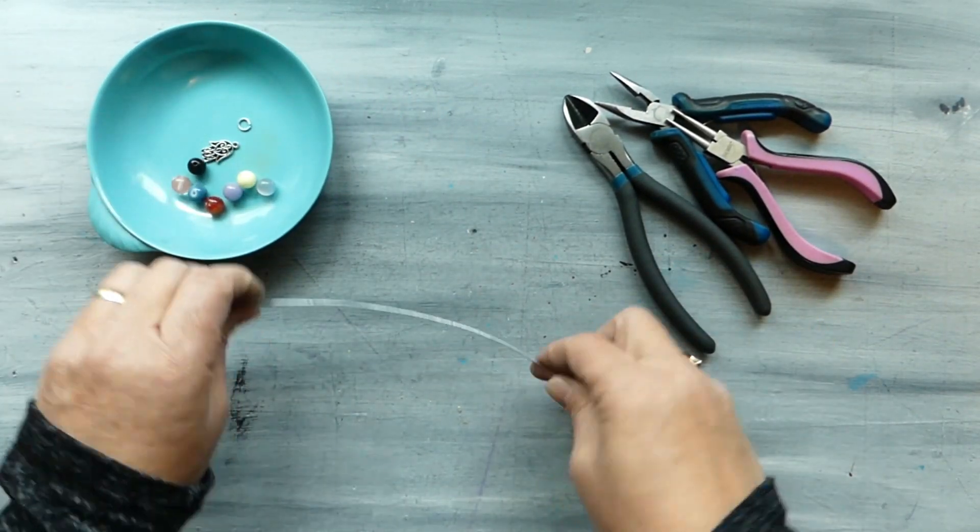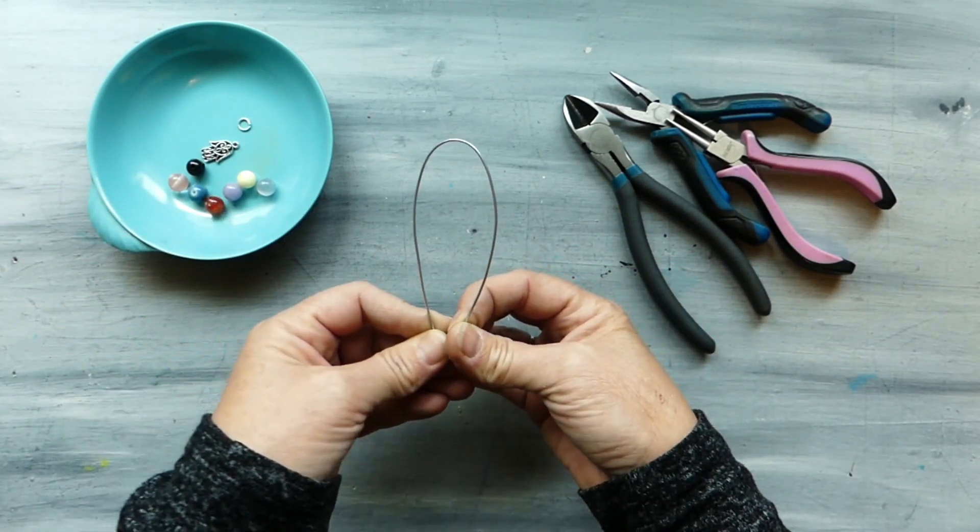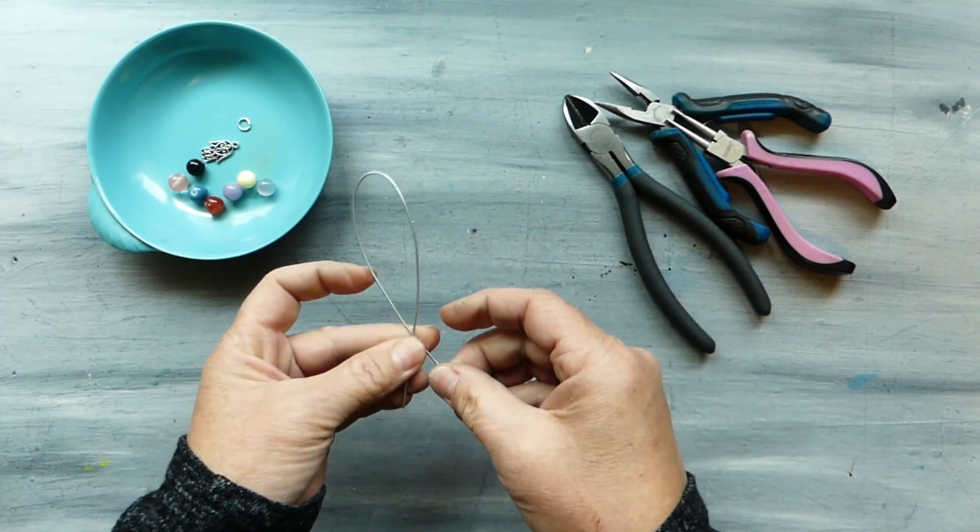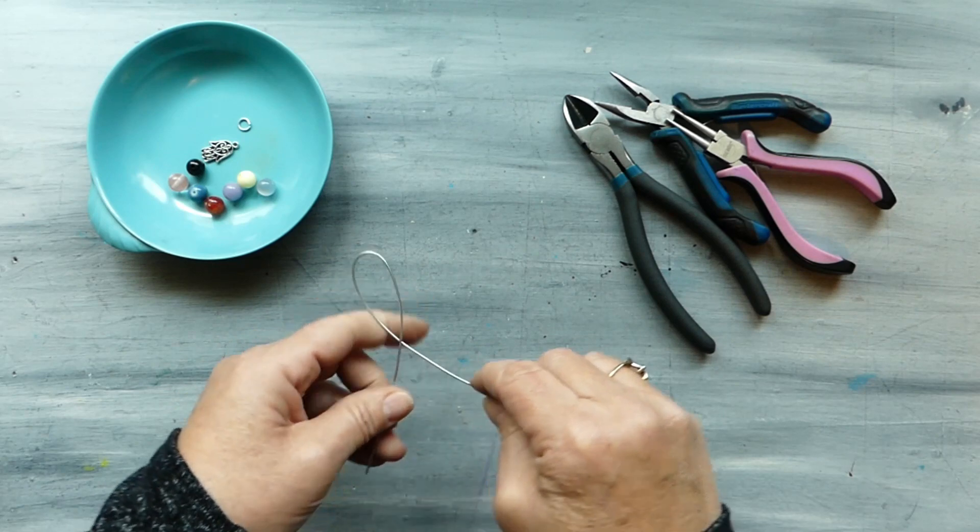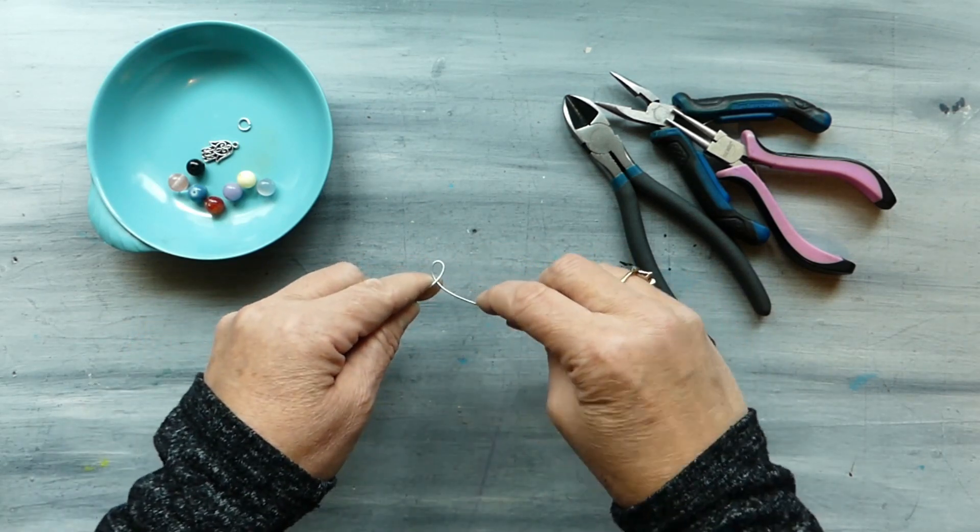So the first thing we're going to do is take our 10 inch piece of wire and fold it in half-ish, it doesn't matter if one side's a little bit longer than the other, and then we're going to just give it a little squeeze like this so that it forms that loop.